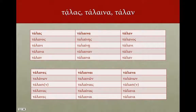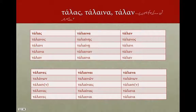Only a few adjectives decline like talos, talina, talon, meaning wretched. Another very common adjective is melos, meaning black: melos, melina, melon.